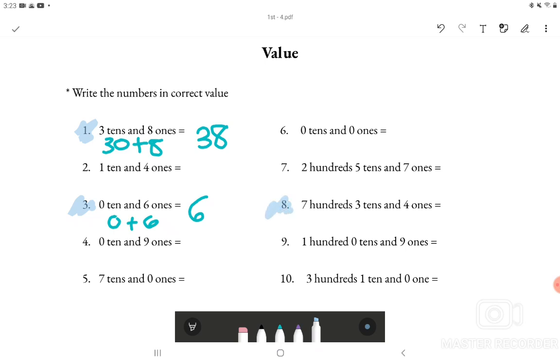Looking at number 8 it says 7 hundreds, 3 tens and 4 ones. So that means there are 7 hundred, 30 and 4. When we add all of them together we have 734.